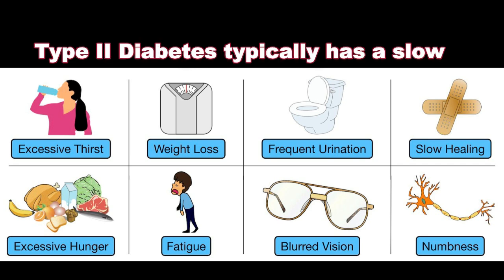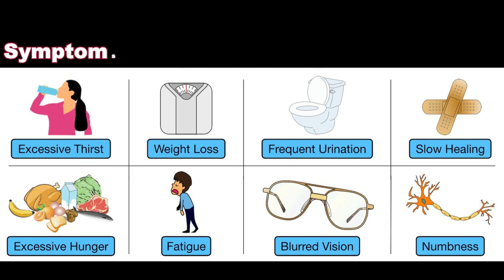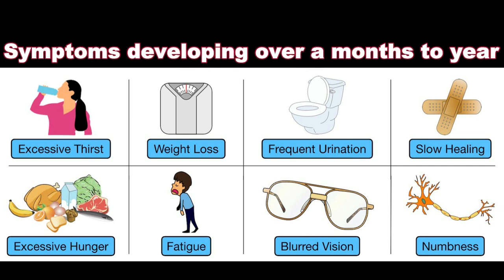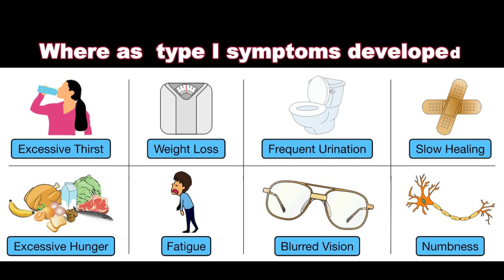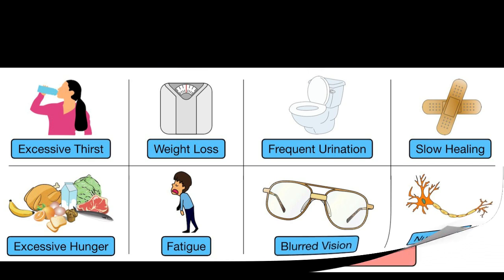Type 2 diabetes typically has a slower onset than type 1 diabetes, with symptoms developing over months to years, whereas type 1 symptoms develop within days to weeks.